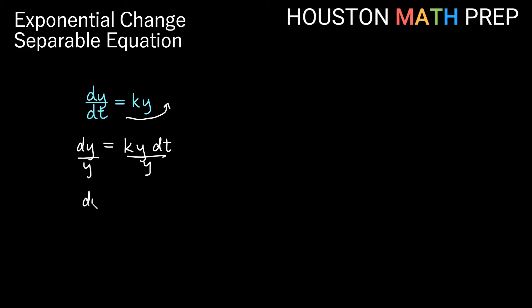We will have dy over y on the left side and we'll have k times dt. Now remember that k is just a constant, so you do have all of the t's on one side. So we have all the y's here, all the t's here, in separable equations. Once we're separated, then we can go ahead and take the antiderivative with respect to y here and with respect to t over here. If I take the integral of dy over y, that's a log rule. So here we'll get the natural log absolute value of y.